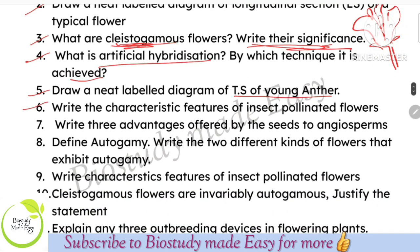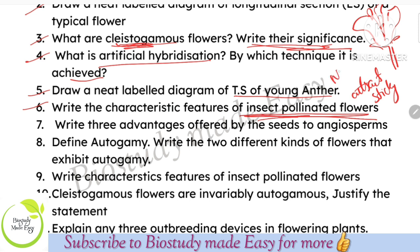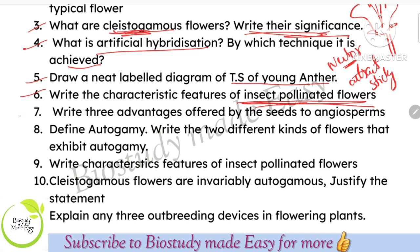Characteristics of insect-pollinated flowers: they should be colorful, bright, and large to attract insects. Pollen grains must be sticky. Insects are attracted to the flower and carry pollen grains; the stigma is also sticky. Insect-pollinated flowers produce more nectar to attract insects.